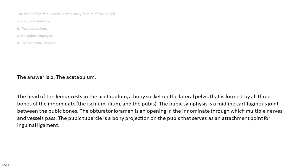The answer is B, the acetabulum. The head of the femur rests in the acetabulum, a bony socket on the lateral pelvis that is formed by all three bones of the innominate: the ischium, ilium, and the pubis. The pubic symphysis is a midline cartilaginous joint between the pubic bones. The obturator foramen is an opening in the innominate through which multiple nerves and vessels pass. The pubic tubercle is a bony projection on the pubis that serves as an attachment point for the inguinal ligament.